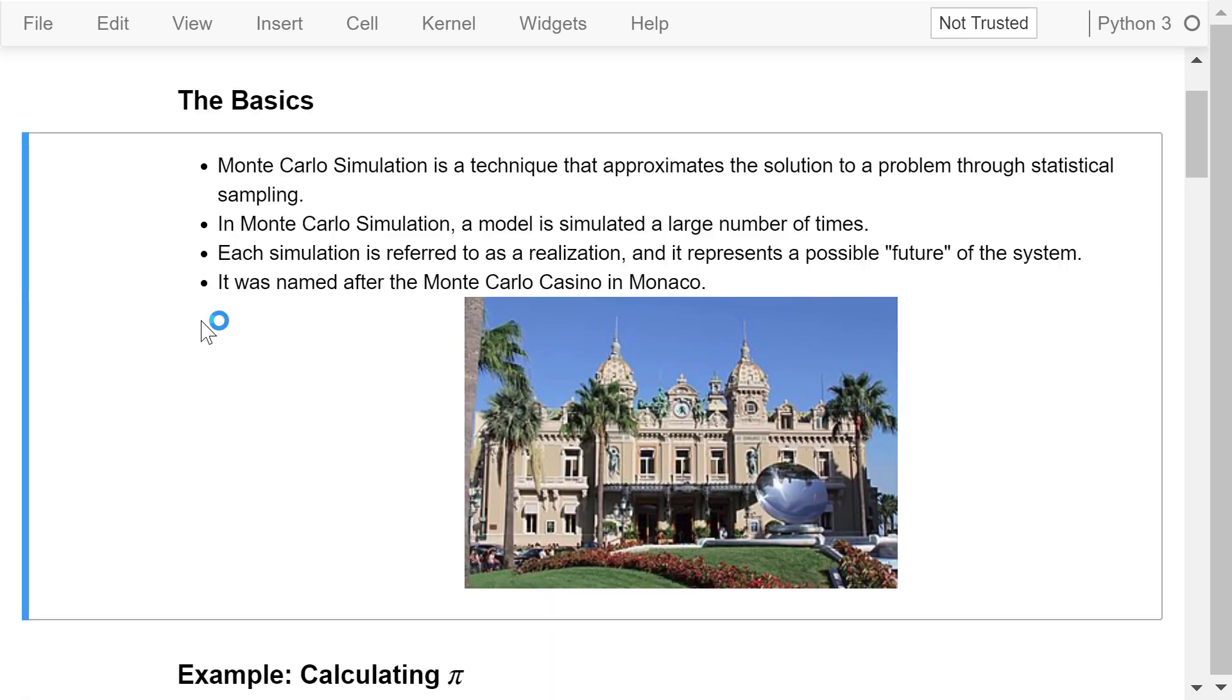Monte Carlo simulation is a technique that approximates a solution to a problem through statistical sampling. It is used to measure how uncertainties, that means probability distributions of parameters, spread from model inputs to model outputs. In Monte Carlo simulation, a model is simulated a large number of times. Each simulation is referred to as a realization, and it represents a possible future of the system.